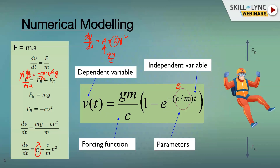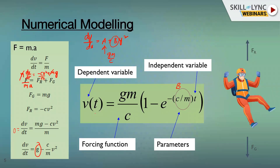Here v is dependent on time — the velocity is changing over time. If velocity were not changing with time, dV/dt would be zero, but that is not the scenario we are considering. We are taking the more realistic case where velocity changes over time. The independent variable is t (time), and we calculate velocity based on it, along with constants like g (gravitational acceleration), m (mass), and C — which depends on the cross-sectional area of the parachute obstructing the flow.